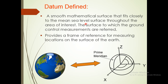What is a datum? It is a surface that fits closely to the mean sea level surface throughout the area of interest — the surface to which ground control measurements are referred. It's very important because it provides a frame of reference for measuring location. If you want to do a beach profile, you calculate the point, but it has to be calibrated back to the datum in order to get the elevation.